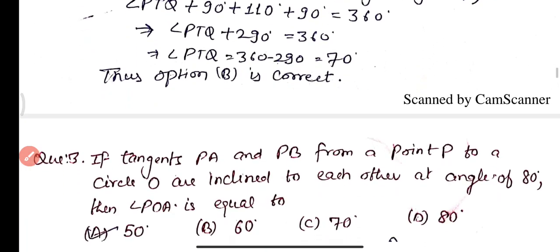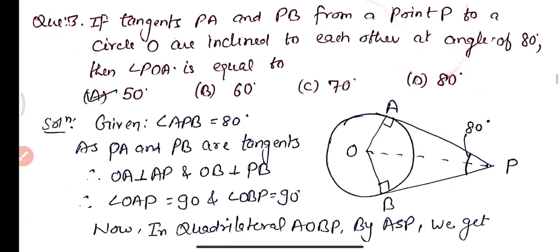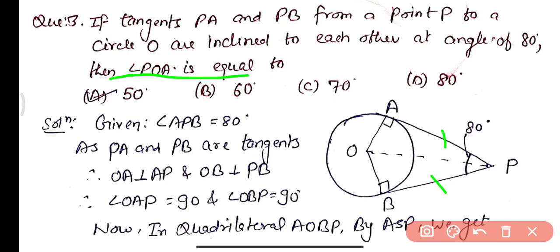Now proceed to Question 3: If tangents PA and PB from a point P to a circle with center O are inclined to each other at an angle of 80 degrees, then angle POA equals? PA and PB are two tangents, the angle between them is 80°. Since radius is perpendicular to tangent at point of contact, angle OAP = angle OBP = 90°. We can find angle AOB and then angle POA.